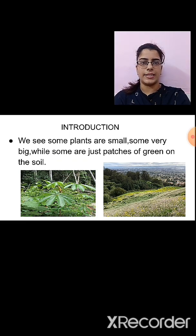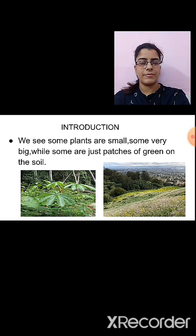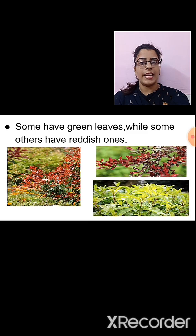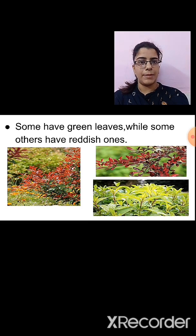In our surroundings, we see many plants. Do all the plants look the same? No, some of the plants are small while some are big. Sometimes we can also see patches of green on the soil. We can also notice differences in the leaves of the plant based on their shape, size and color. Do all the plants have the same type of leaf? No, some plants have a small leaf while some have a big one. The shape of the leaf varies from plant to plant.